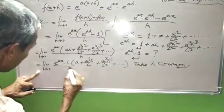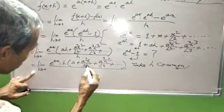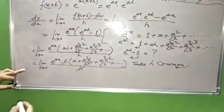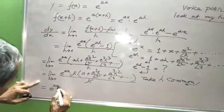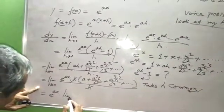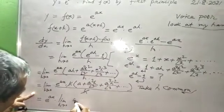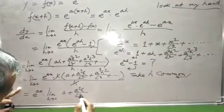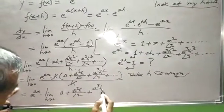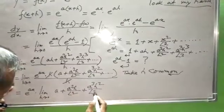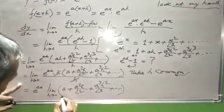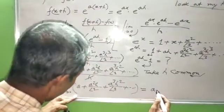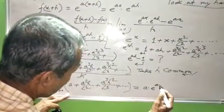The h cancels out. Now applying the limit h tends to 0: e to the power ax times a plus a squared h by factorial 2 plus a cubed h squared by factorial 3 plus dot dot dot equals a into e to the power ax.